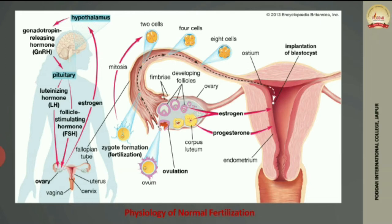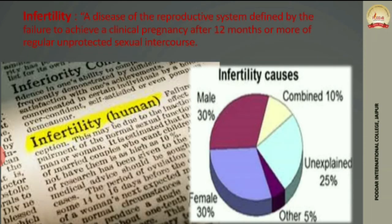If sperm is not available, the egg degrades. If fertilization does occur, the zygote undergoes mitotic cleavage. Hormones such as estrogen and progesterone are produced in the body when fertilization happens. This is the basic natural fertilization process. If there is any failure in this process, then IVF is needed to address infertility.